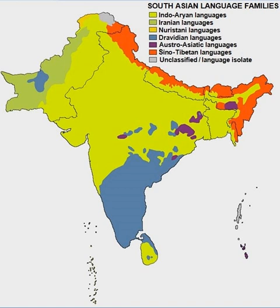Amir Khusro wrote poems in Khariboli and Brajbhasha and referred to that language as Hindavi. During the Bhakti era, many poems were composed in Khariboli, Brajbhasha, and Awadhi. One such classic is Ramcharitmanas, written by Tulsidas in Awadhi. In 1623, Jatmal wrote a book in Khariboli with the name Gora Badal Ki Katha. The establishment of British rule in the subcontinent saw the clear division of Hindi and Urdu registers. This period also saw the rise of modern Hindi literature starting with Bharatendu Harishchandra.